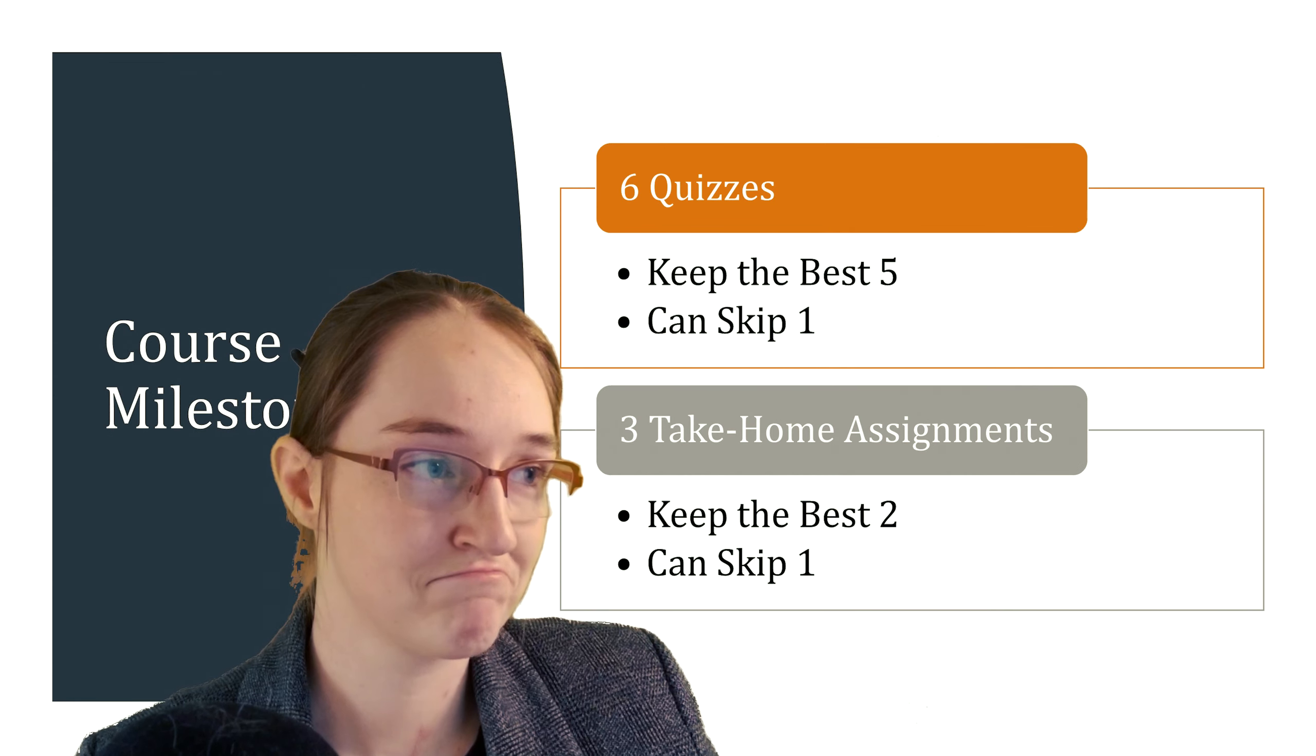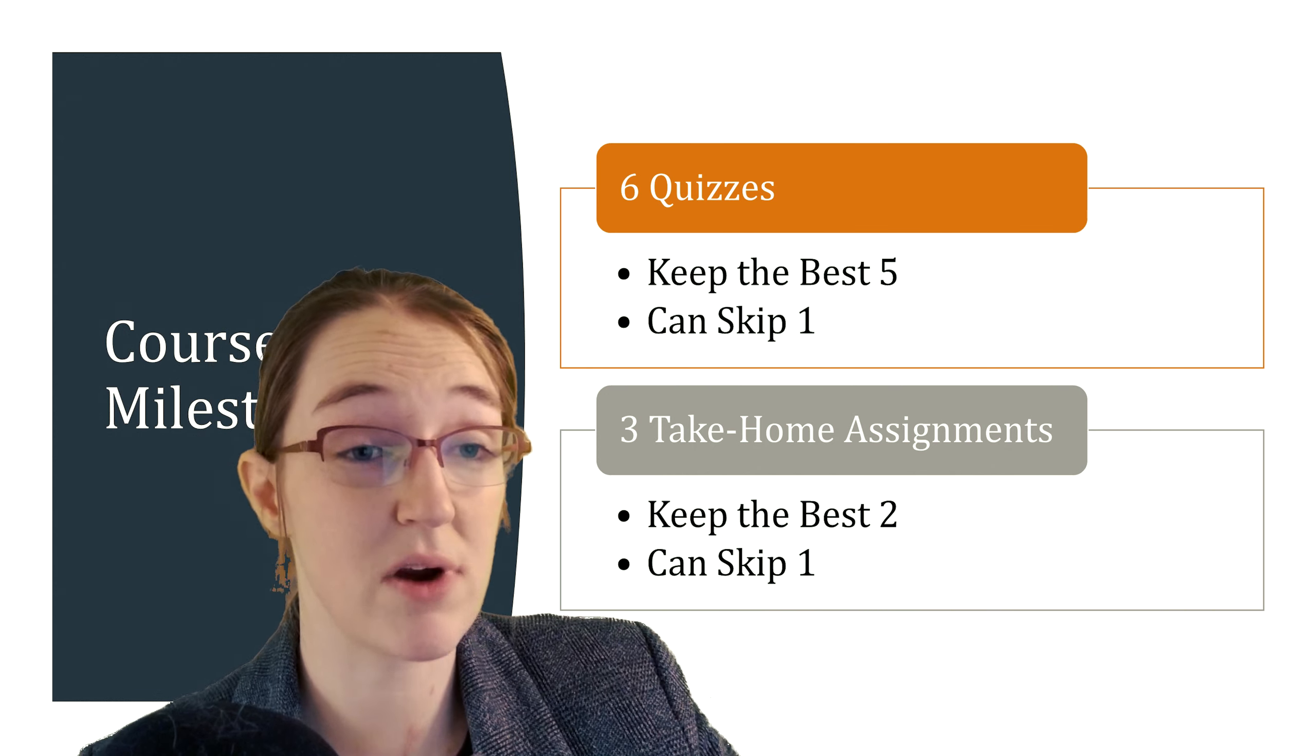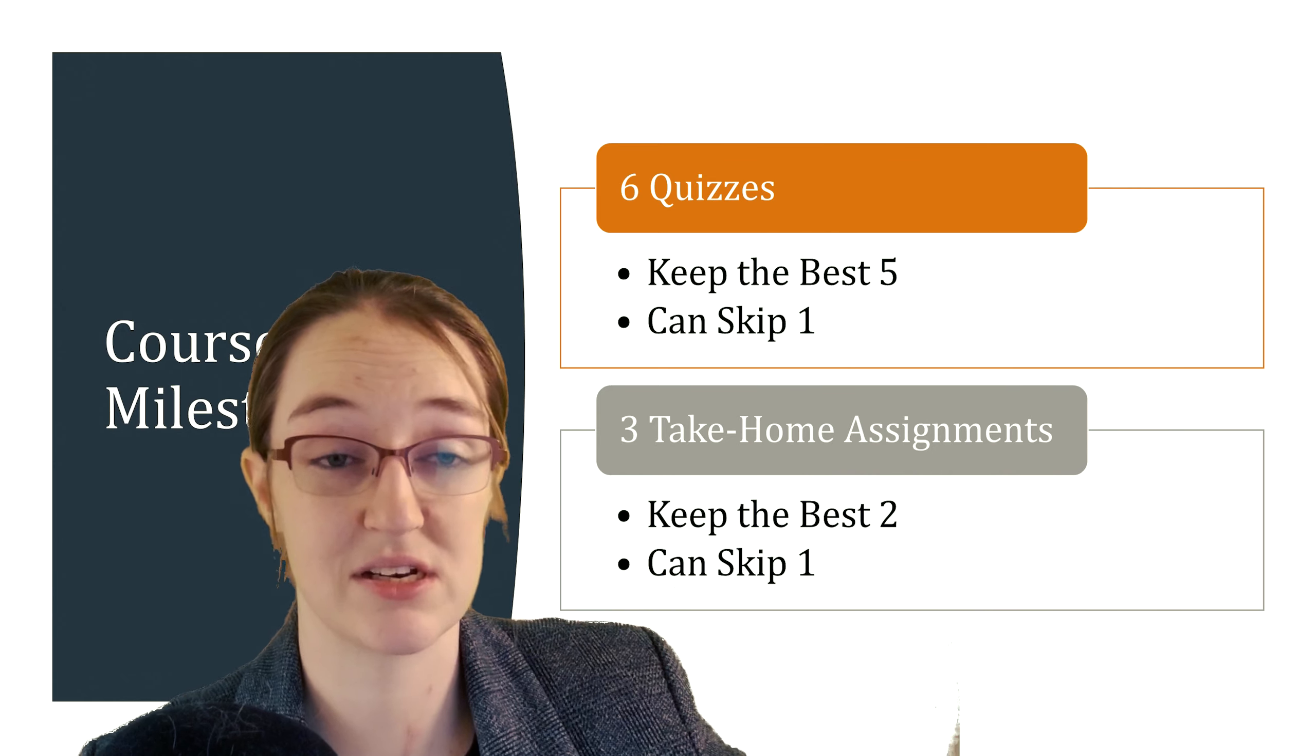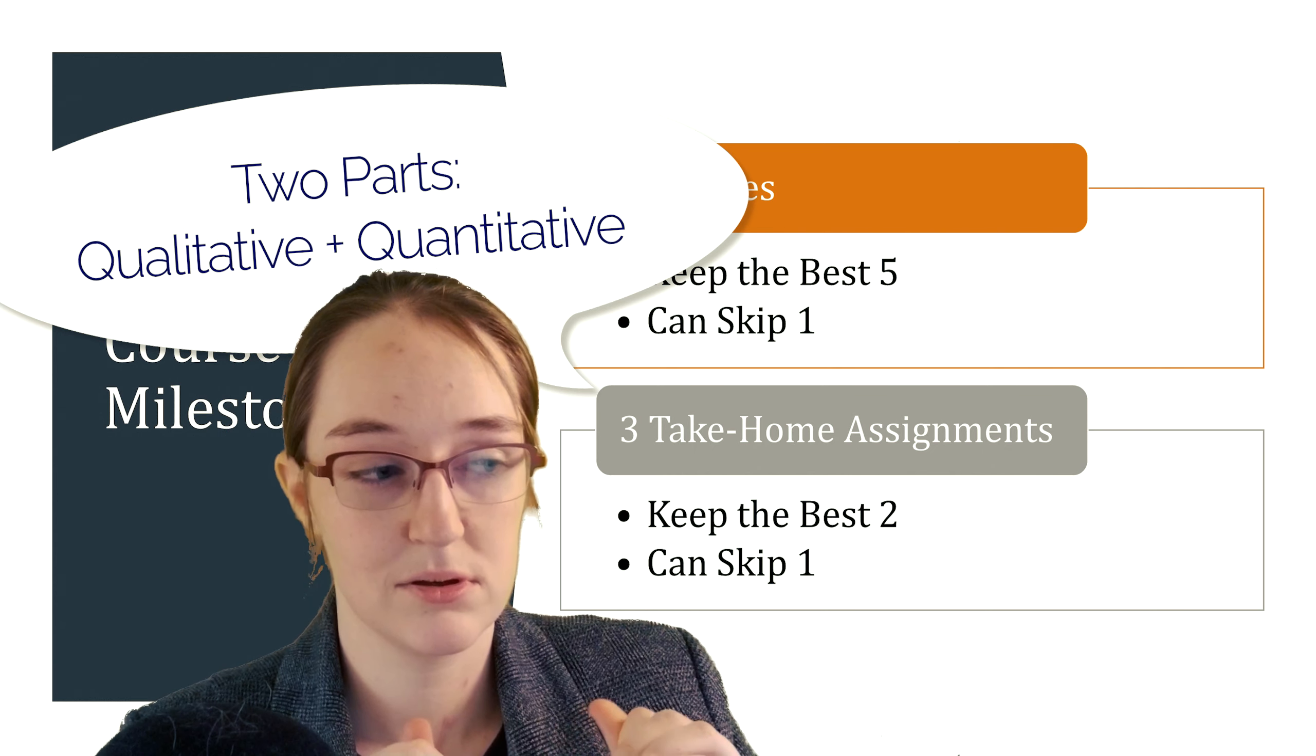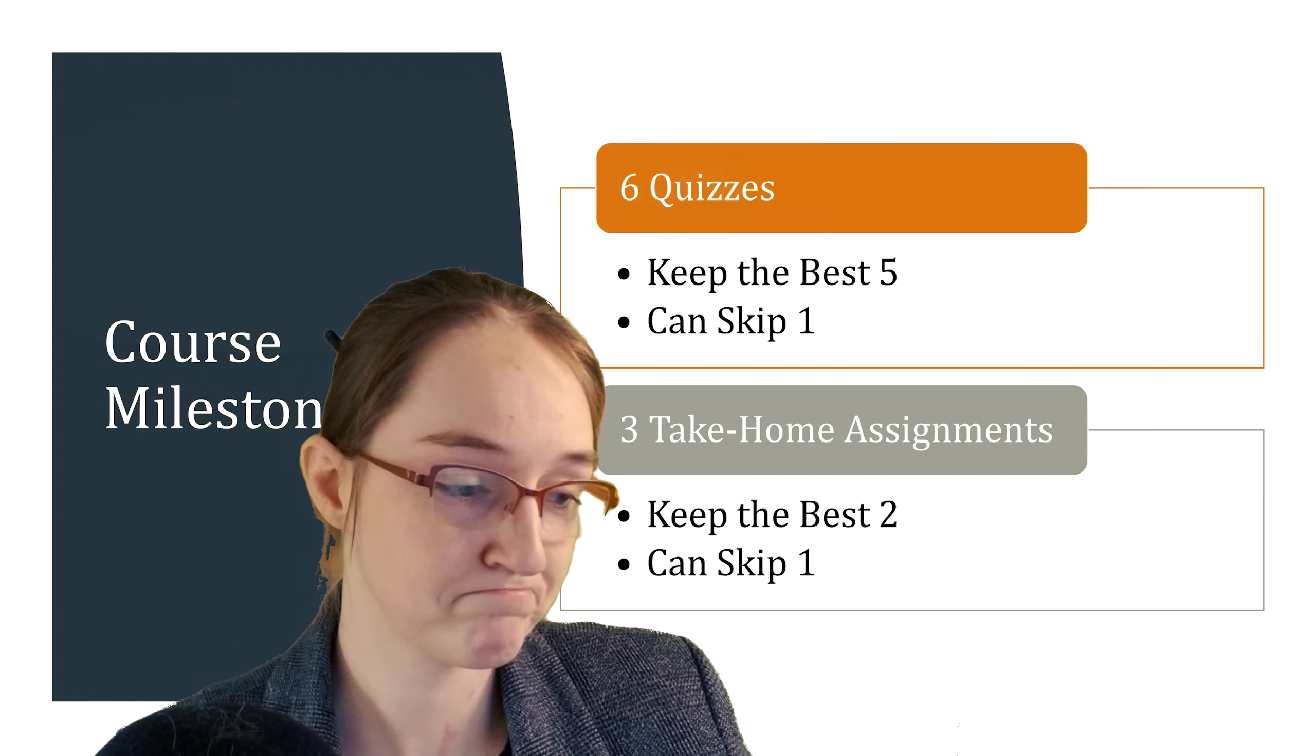In terms of milestones, there will be six quizzes, two quizzes per class chunk, and you can keep the best five and you can skip one. The other thing we'll have is three large take-home assignments. These are multi-part aspects. There'll be a qualitative piece and a quantitative piece. For both of those pieces, you can keep the best two and skip one. So you can mix and match. They're due at the same time, about five weeks, 10 weeks, and 15 weeks in.